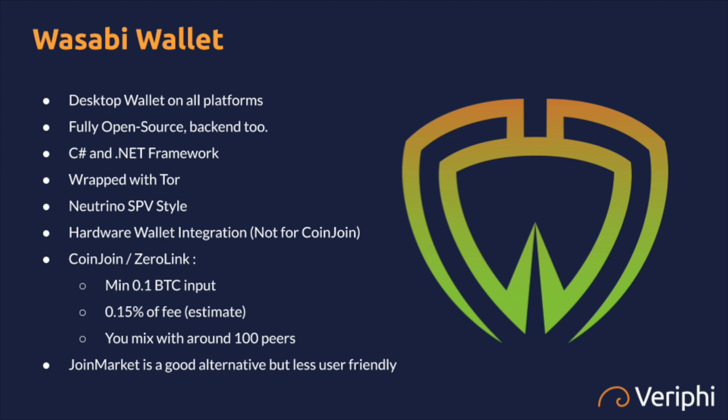You can opt out of Samourai Wallet's server by replacing the backend with your own open-source backend called Dojo. But if you're mixing with five people and four out of five are not using their own backend server — their own Dojo — they're all connecting to Samourai Wallet's server and revealing all their addresses.